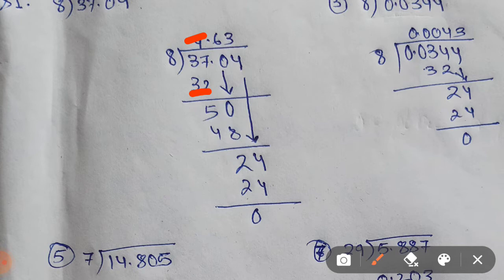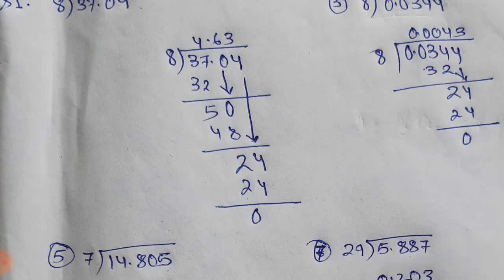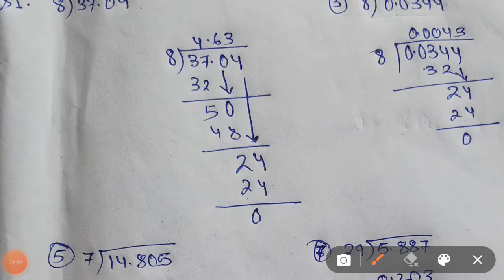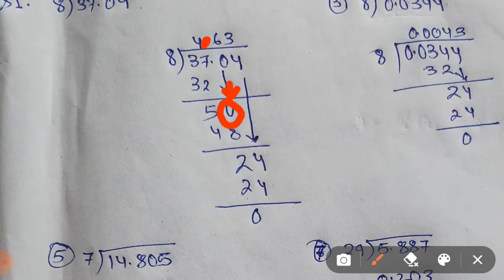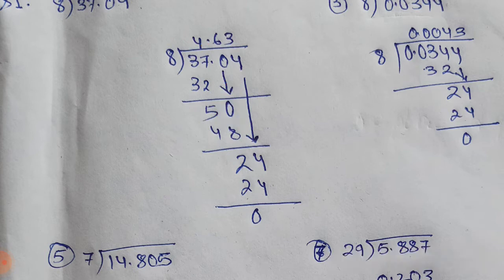After writing this we will subtract 32 out of 37. When you subtract 2 out of 7 you will get 5. So 3 minus 3 will be 0, which we will not write here. And then we will take this decimal point up, because the number before the point is over and what is left is after the point. So we will put the decimal point up here. After that we will bring this 0 down. Now the number which was 5 before is now 50.